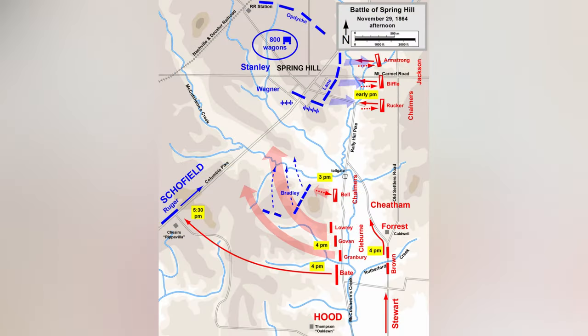By 11:30 a.m., Forrest's cavalry reached Spring Hill, engaging elements of George Wagner's division. Patrick R. Claiborne's Confederate division joined the fray, launching a limited assault met with fierce Union resistance.